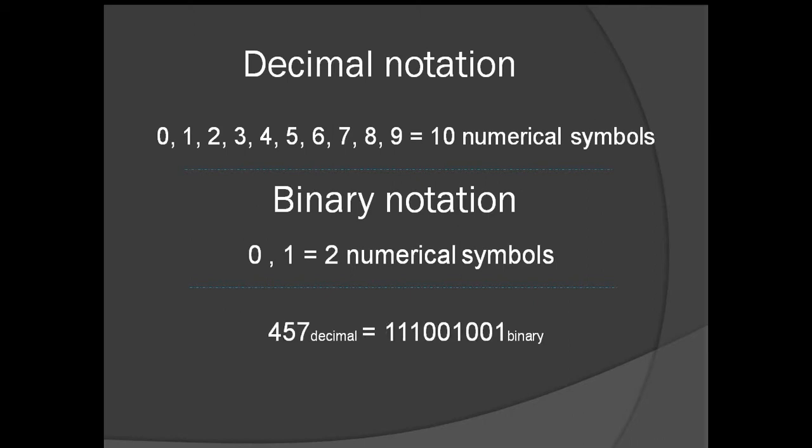For example, here I have the number 457 in decimal. And you look on the right, the binary notation for this same number. The only difference between binary and decimal is the number of numerical symbols used to represent the values. In binary, as you can see, it occupies more space than the decimal notation.